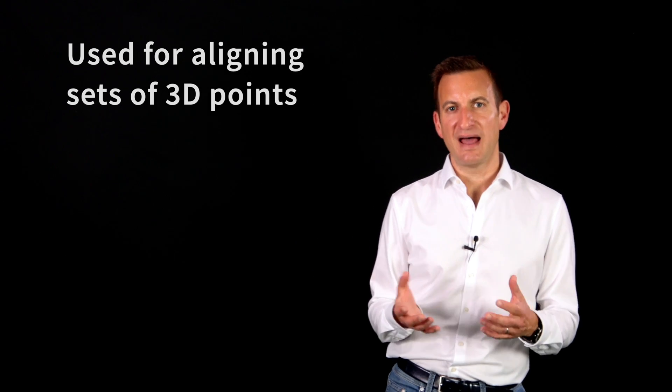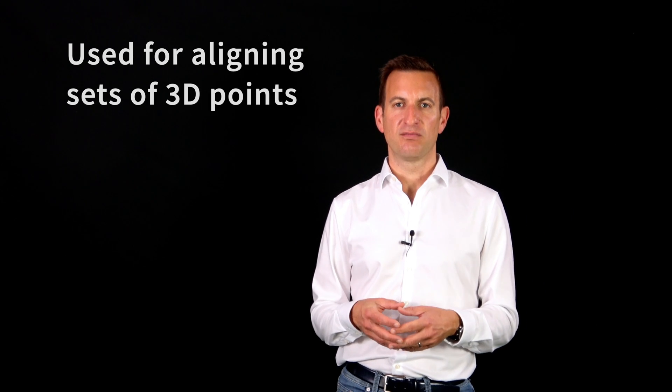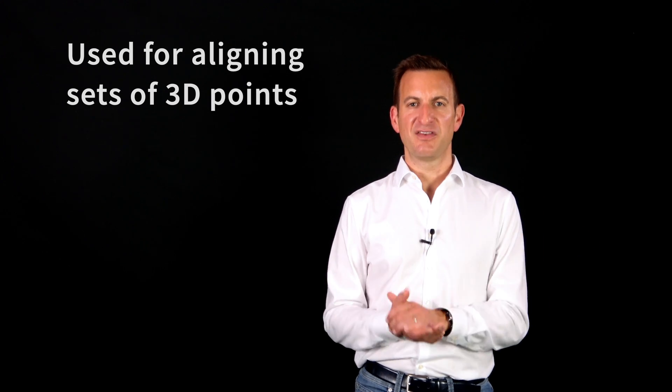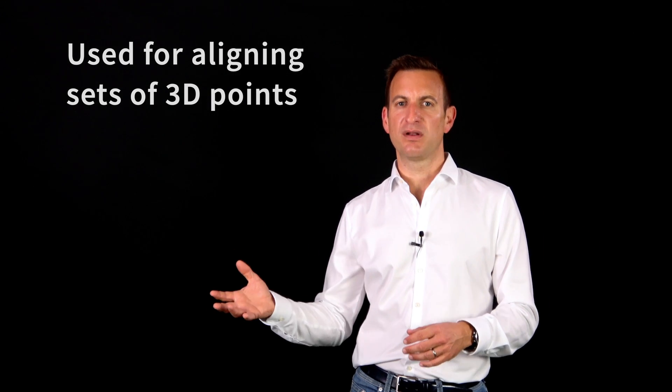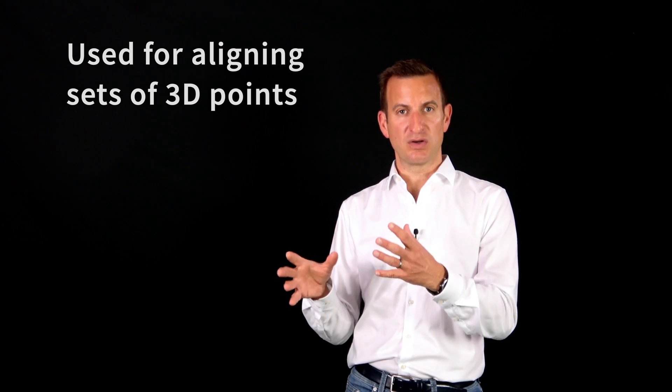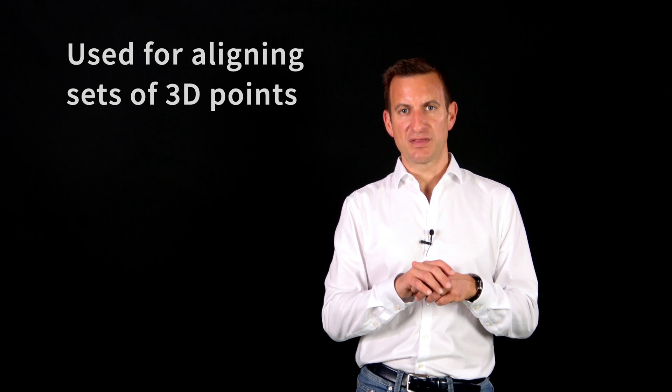The absolute orientation problem always pops up if you want to align sets of 3D points. So let's say you have two sets of 3D points, maybe one stemming from an existing 3D model that you have, and a second one from a sensor such as a camera or laser scanner that you just recorded locally and you want to align them with each other.